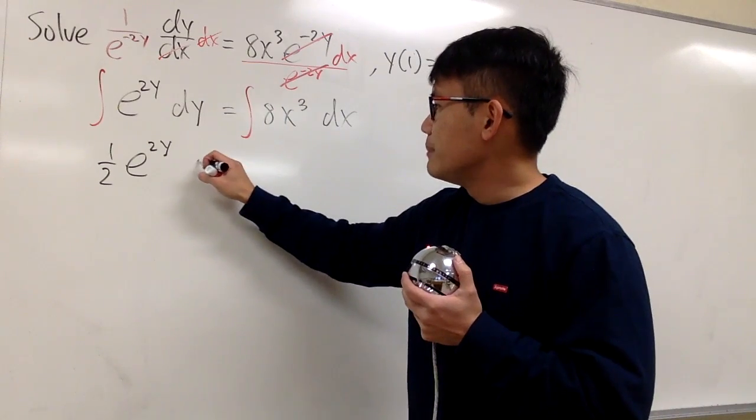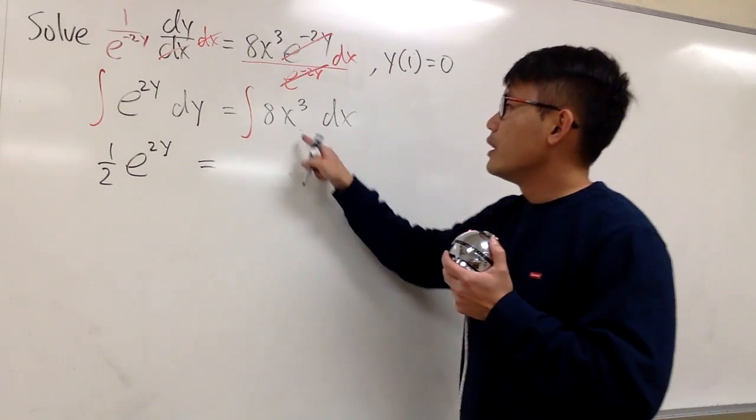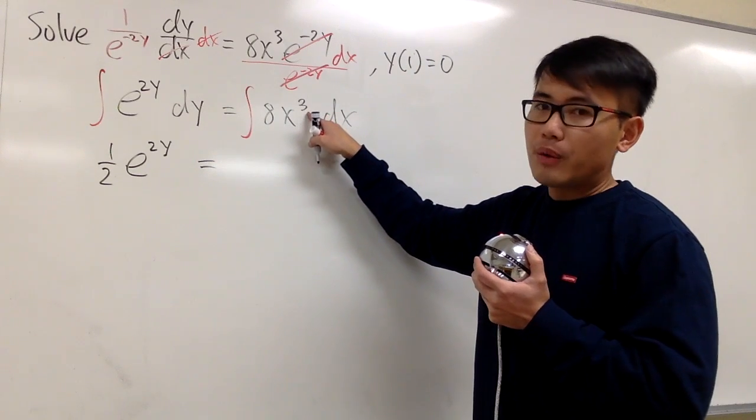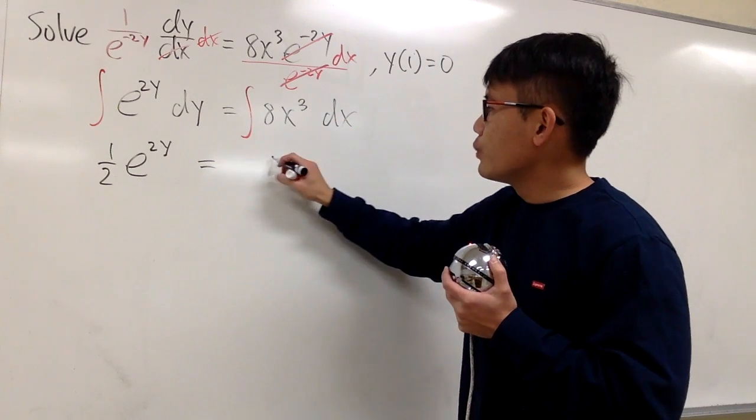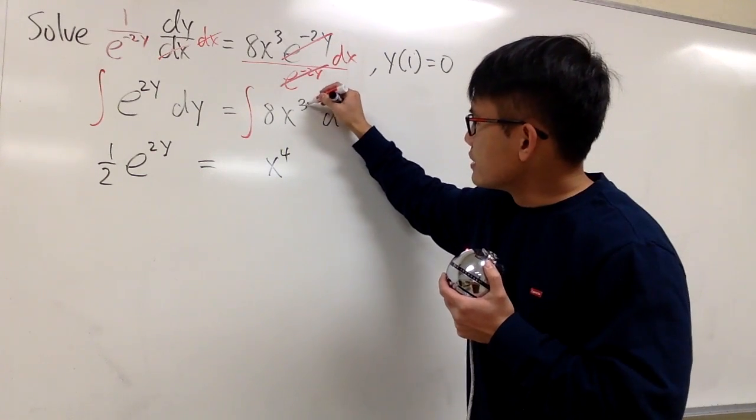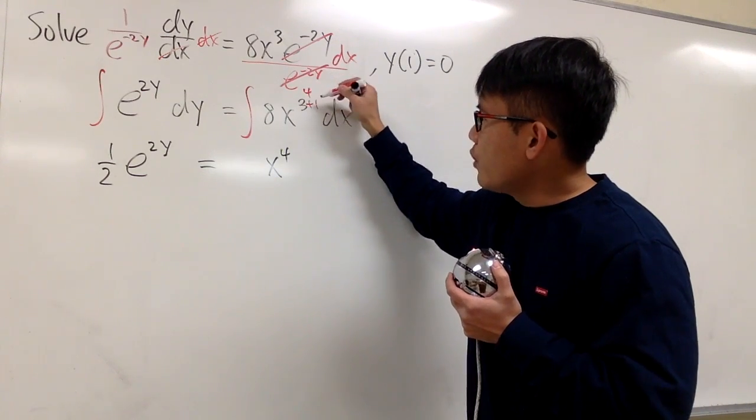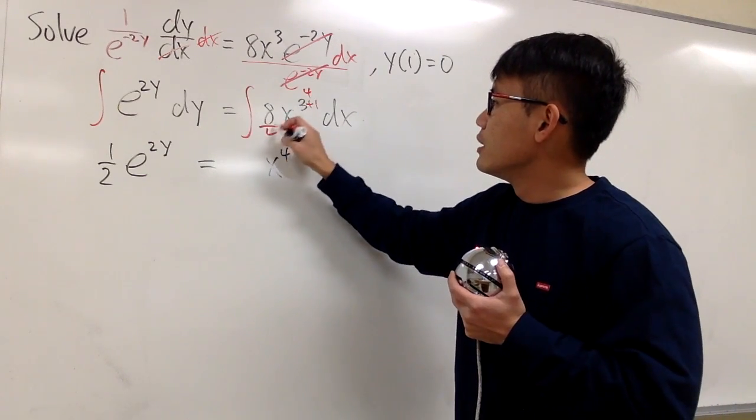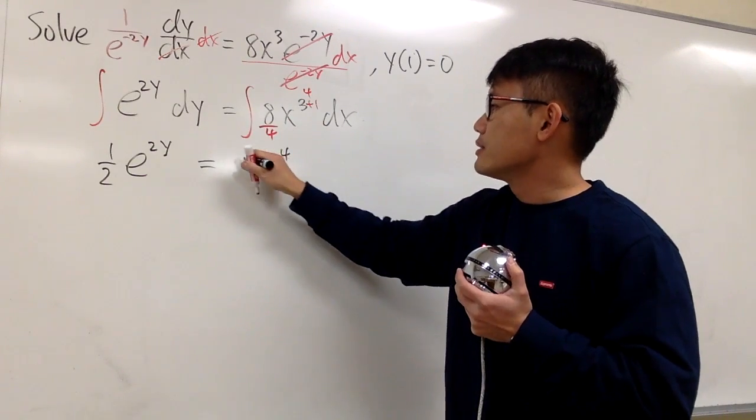Don't worry about the plus c. Let me just write this down as equals 2. And here we have 8x to the third power. You add 1 to the power, which is x to the fourth power, right? So let me just show you guys the steps. Plus 1, which is going to give us 4. And divided by the new power,